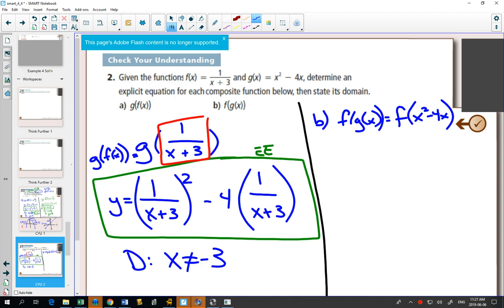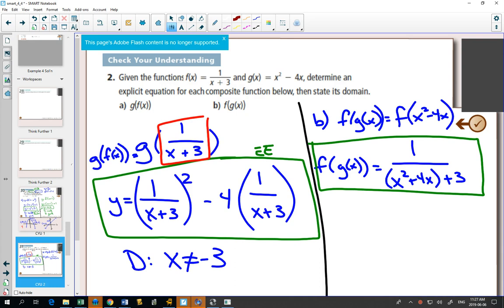And then what does f do? Whatever you plug in, so f of g of x will equal whatever you plug into f, you do 1 over that and then add 3. So this is our explicit equation.